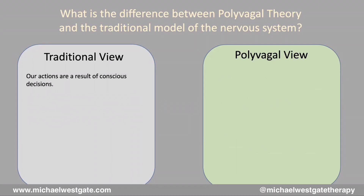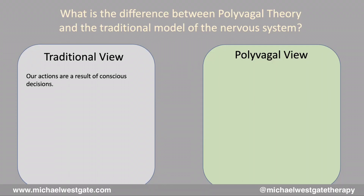Here's a real doozy. The traditional view holds that our actions are the result of conscious decisions. Polyvagal sees it as the polar opposite — most of our actions are the result of ancient systems in our body that are designed to help us survive, and they operate automatically most of the time. So most of your decisions are not made consciously; they're made by your subconscious.